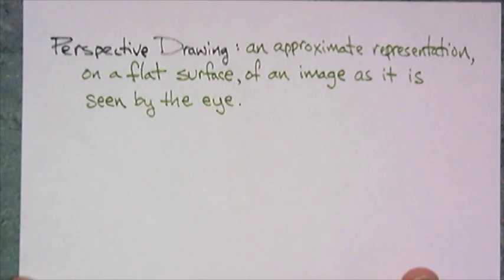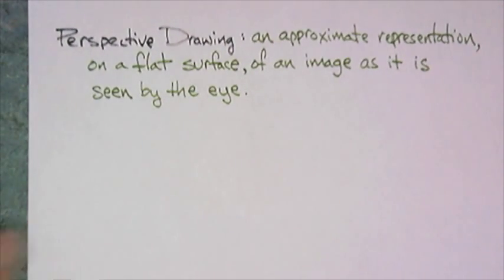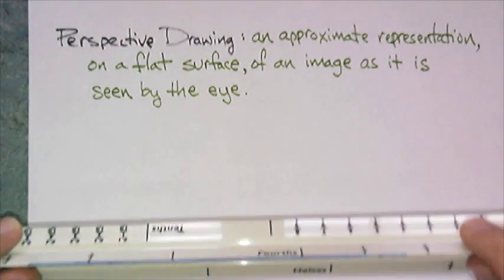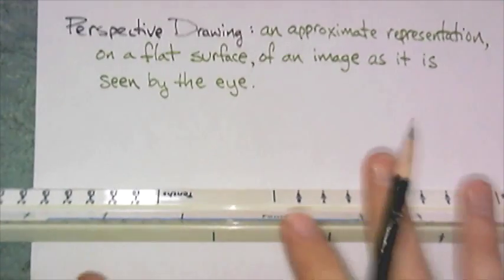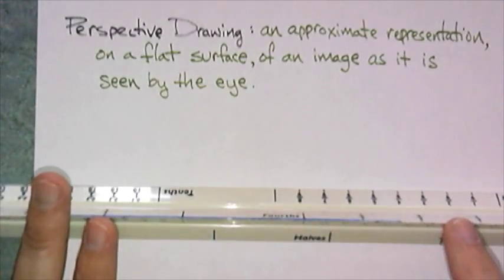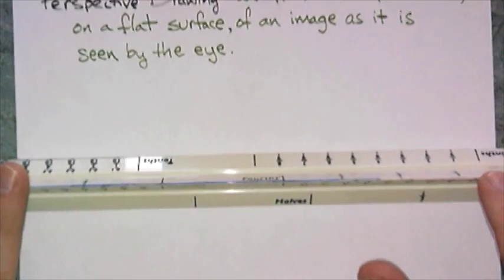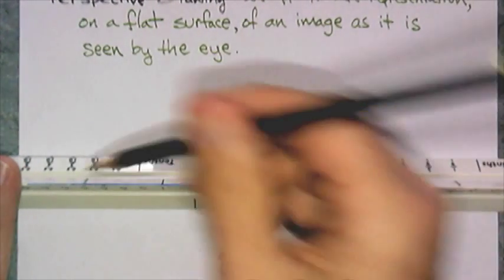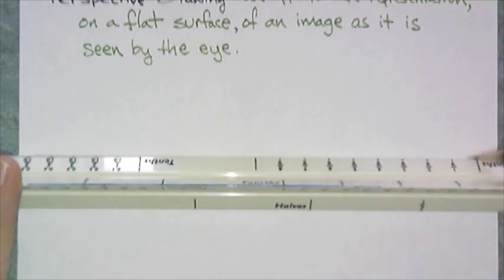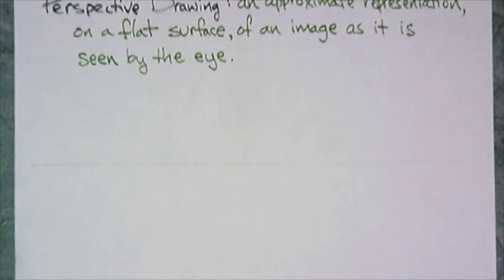I am going to show you how to make a simple, elementary perspective drawing. First off, we're going to start off with a horizontal line. I put my ruler down, I draw a line. That line represents the horizon.